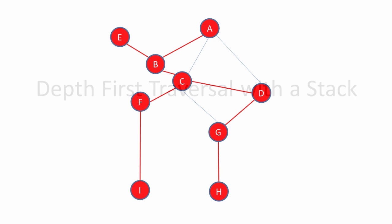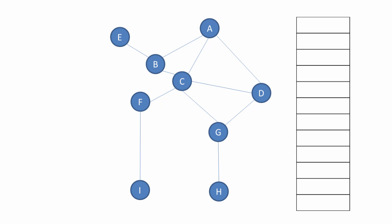So how is this done programmatically? Depth first traversal can be managed by means of a stack data structure. Here's our graph and here's a stack. As we follow a path of vertices, we push each vertex onto the stack until such time as the path is exhausted. Backtracking involves popping vertices off the stack one at a time until we come across a vertex which has adjacent unvisited vertices. In this case, vertex C. So then we explore this path, pushing vertices onto the stack as we go.